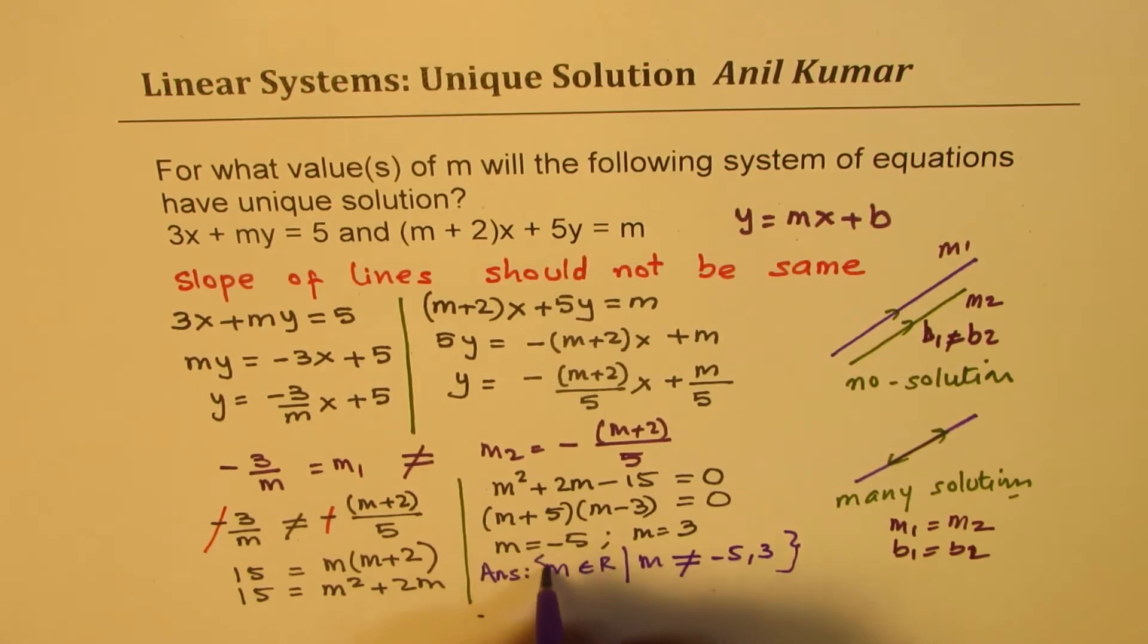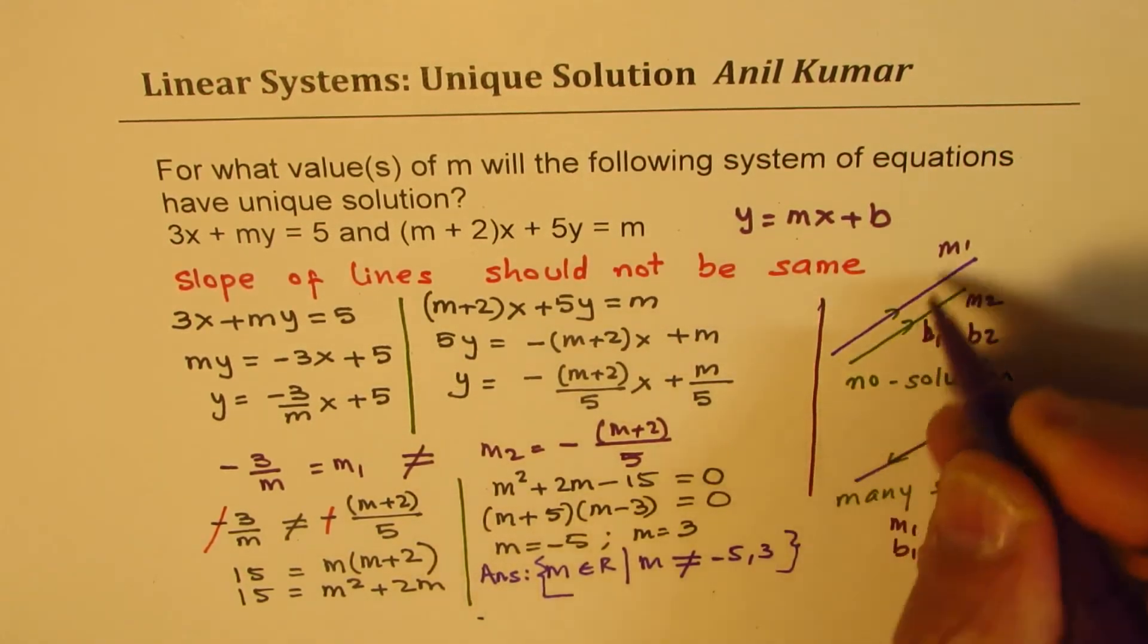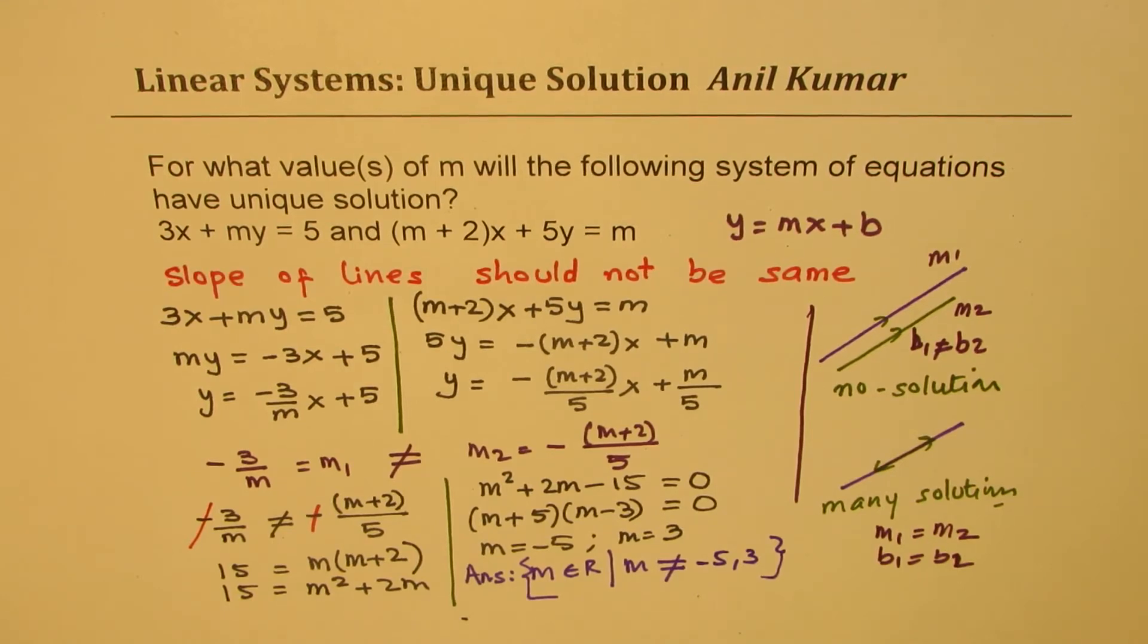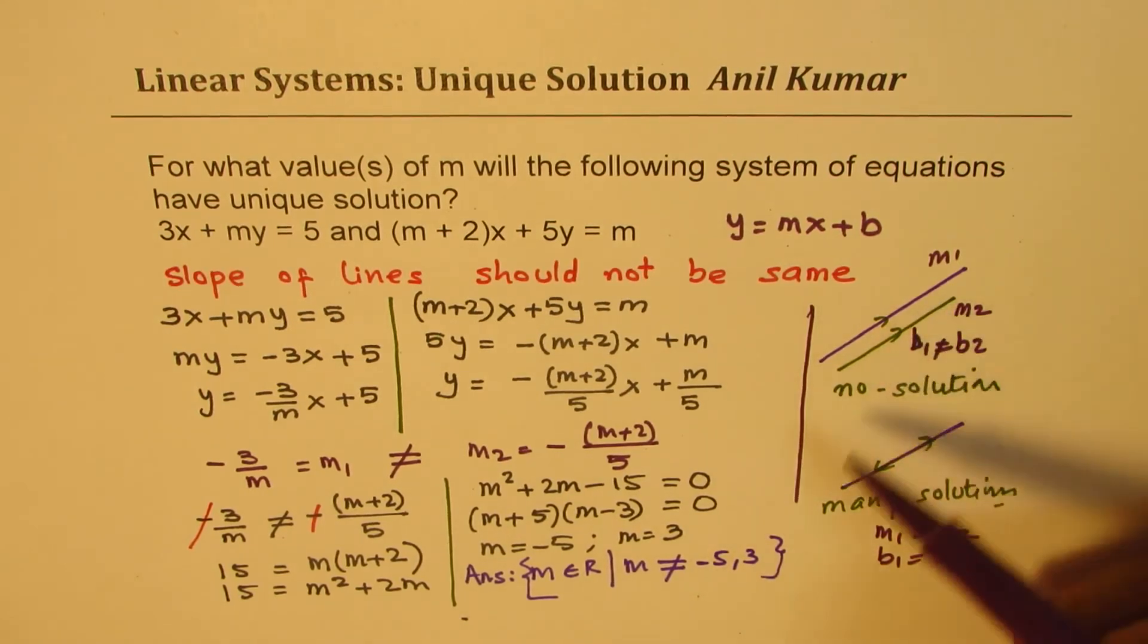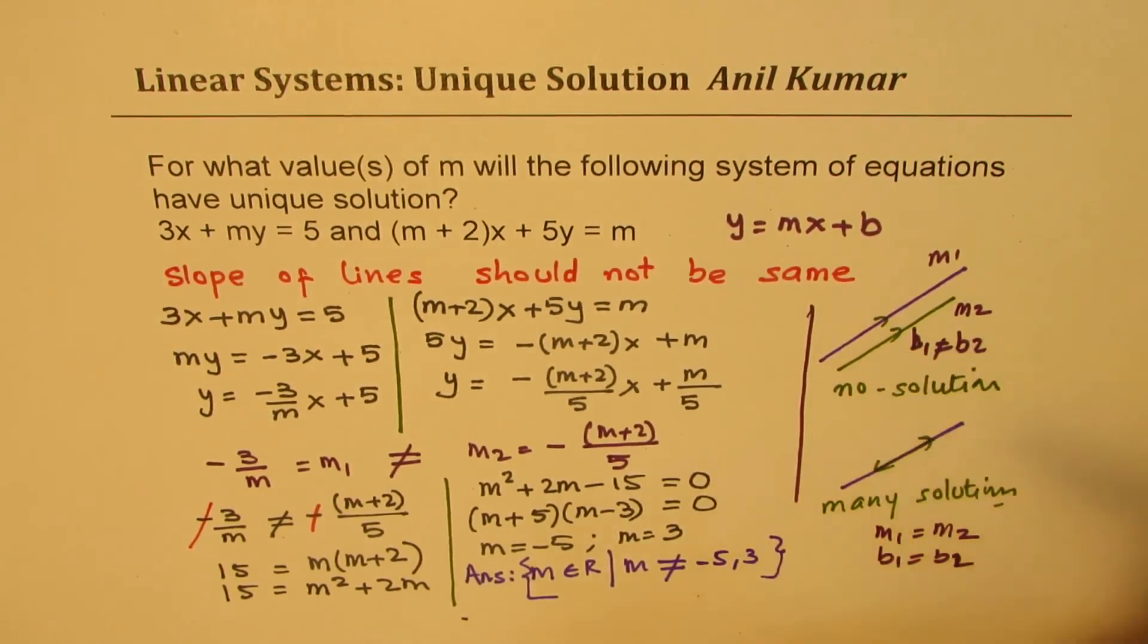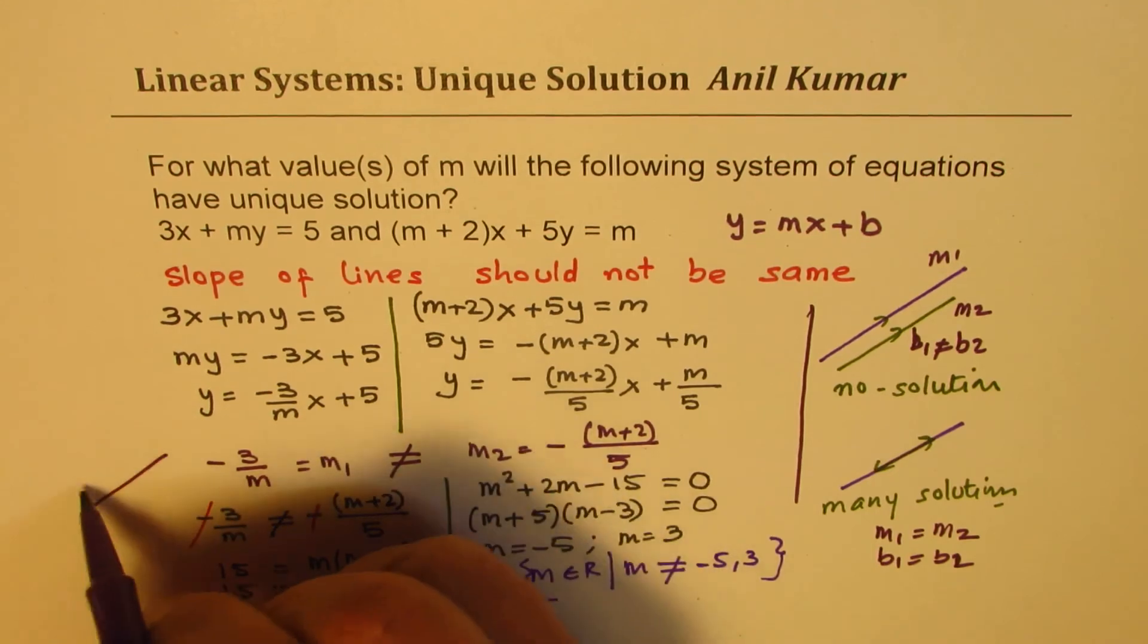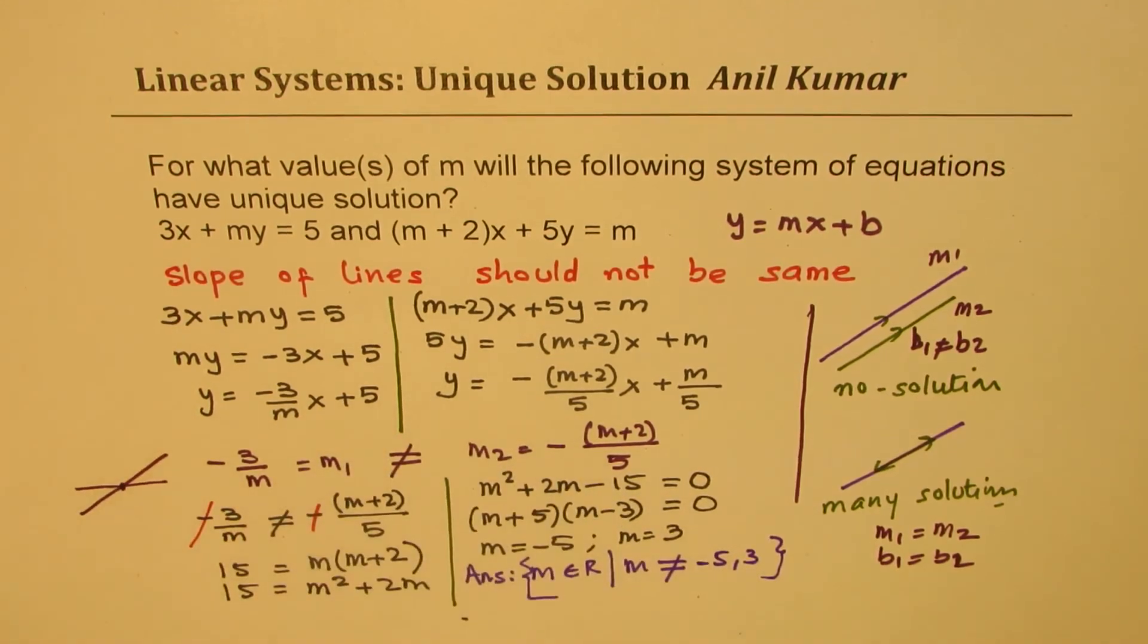So that is how we could answer this question. I hope it helps you to understand the concept also, which is when do they have no solution, many solutions, and only one solution, meaning they are not having the same slope. So that is how we could do it. I hope that helps. Feel free to write your comments and share your views. Thanks for watching and all the best.